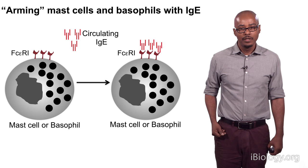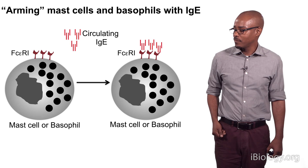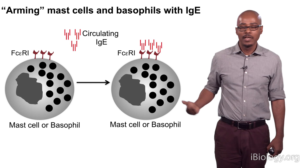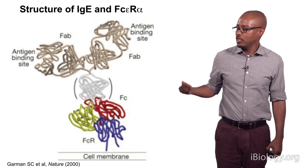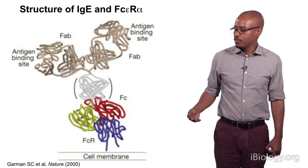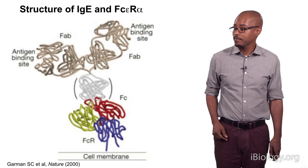When that circulating IgE is made after the first time you were exposed to an allergen, it can now interact with the receptors on mast cells and basophils — we call that arming of these mast cells and basophils with IgE. Now the receptors are occupied with IgE, and the mast cell or basophil is primed to respond the second time, or subsequent times, that you get exposed to that allergen. Here's the structure of IgE: you can see the antigen-binding site bound to its receptor, found on basophils and mast cells, now ready to respond to antigen.